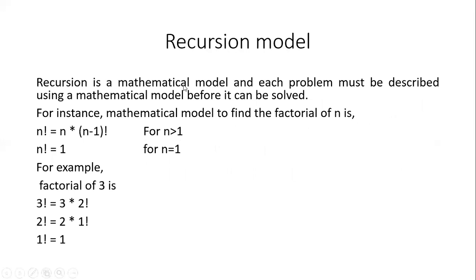Recursion is a mathematical model and each problem must be described using a mathematical model before it can be solved. There are many problems in computer science which are by nature recursive — such as finding the factorial of a given number, finding the sum of first n numbers, Fibonacci series, and finding the product of first n numbers. Because all these are iterative problems and recursive in nature, they can be solved using recursion.